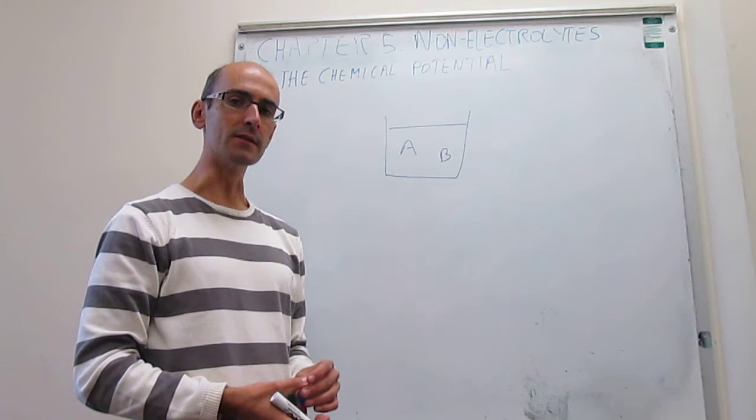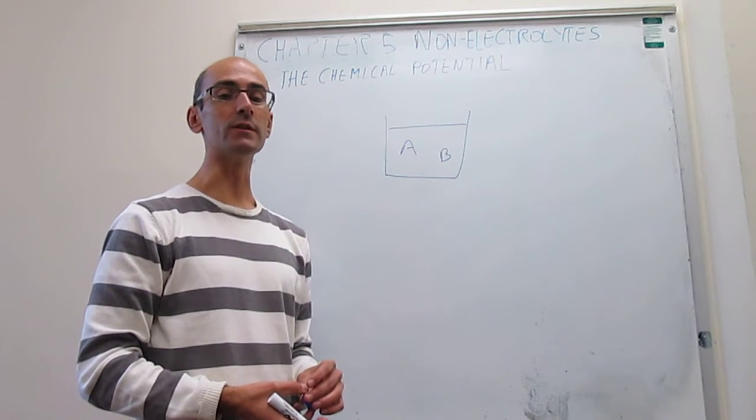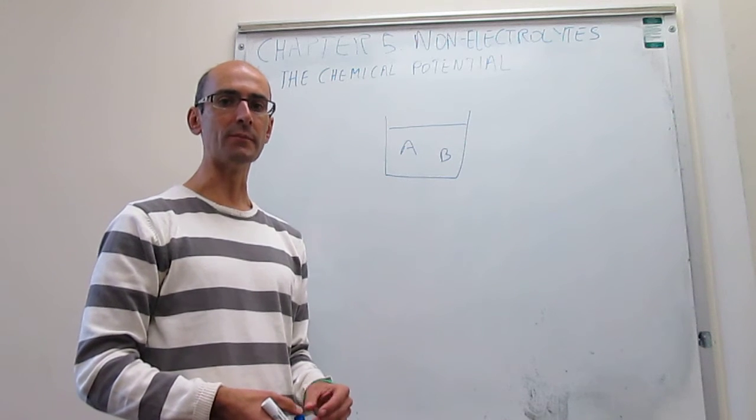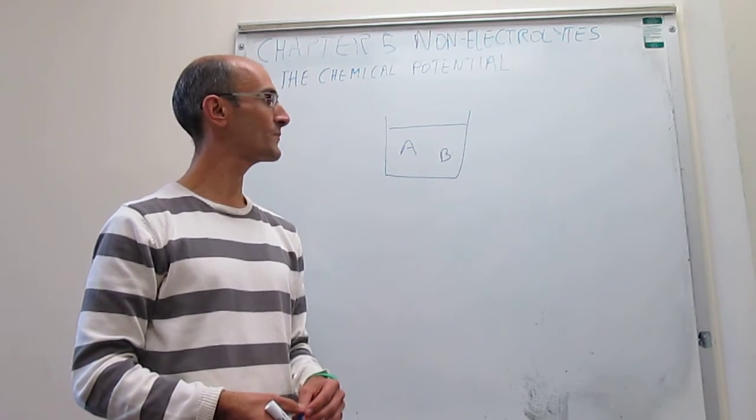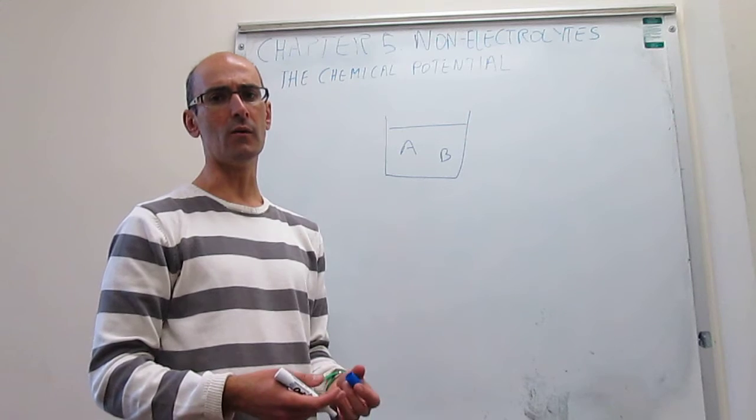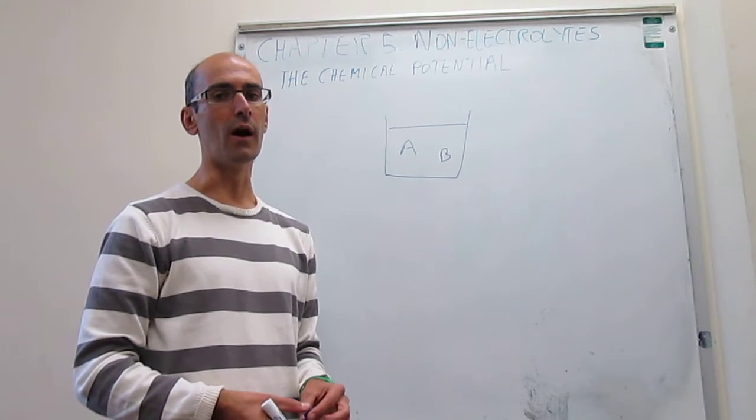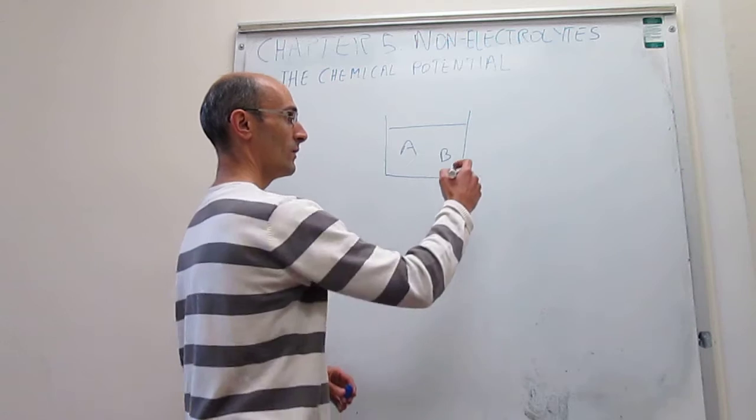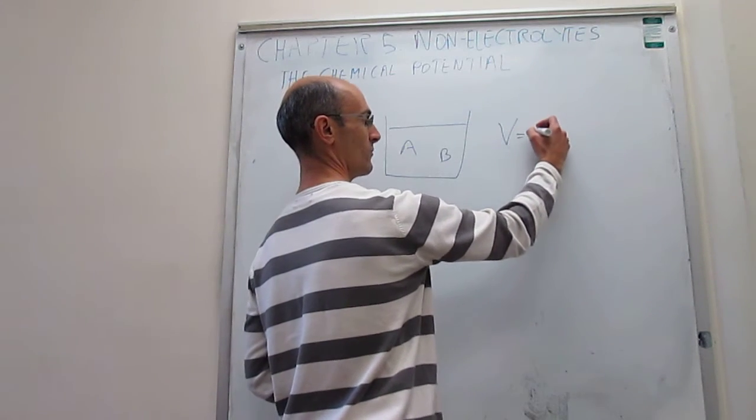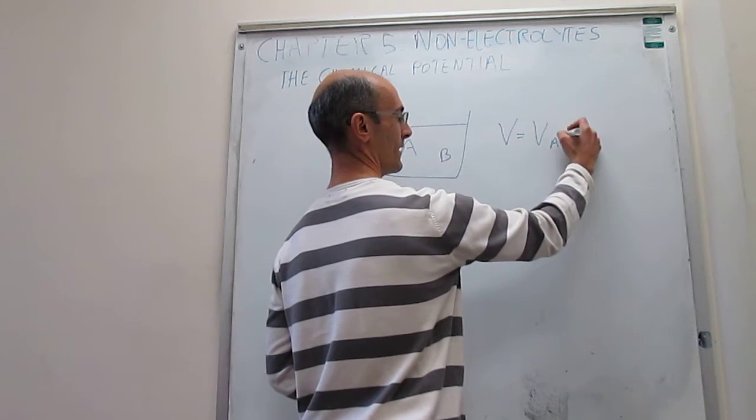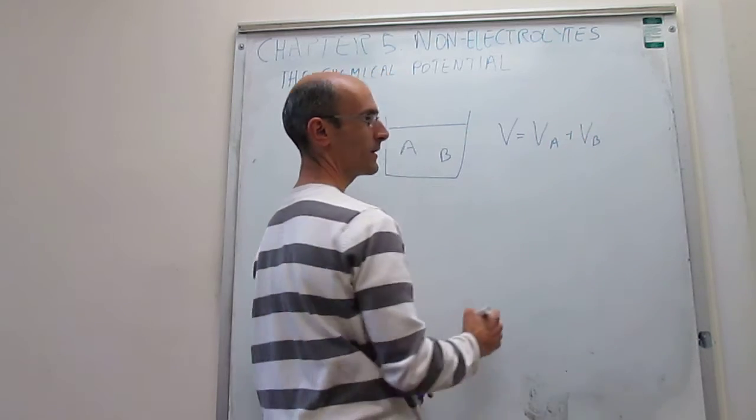Now, the question that we ask ourselves is, how do we begin to understand the thermodynamic properties of this mixture? For example, we could ask, how do you actually calculate the volume for a mixture like this? Well, the total volume of the mixture will be trivially the volume of A plus the volume of B.